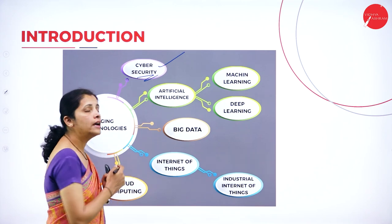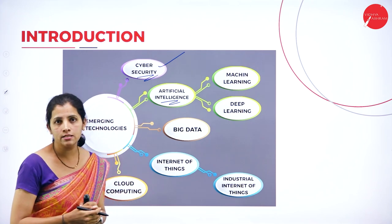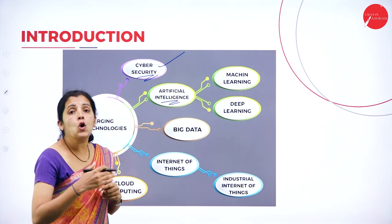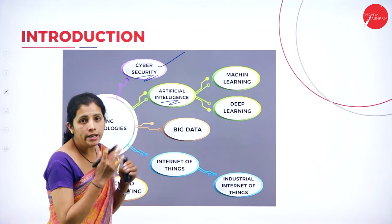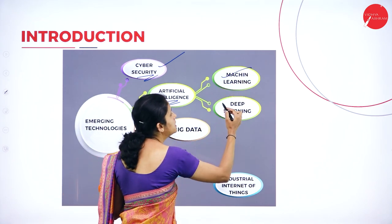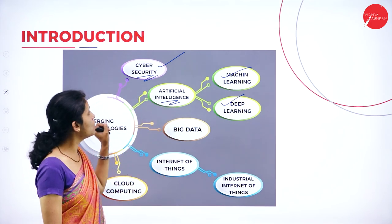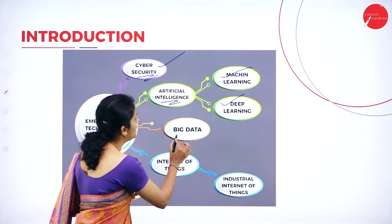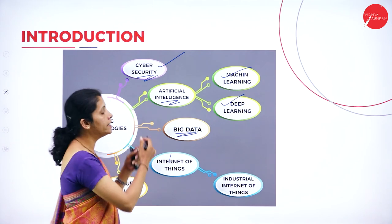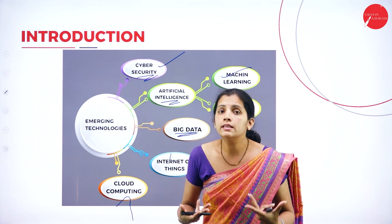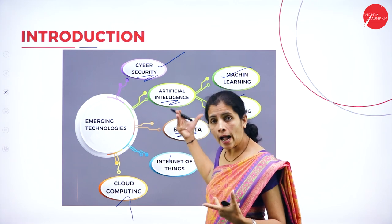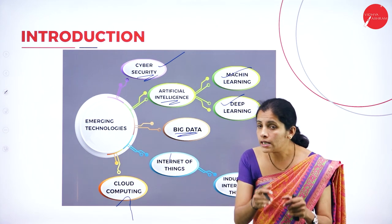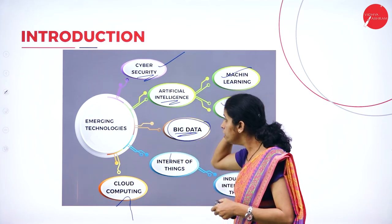Another emerging trend is artificial intelligence. 'Artificial' means man-made and 'intelligence' means cognitive, so AI is man-made cognitive. It includes machine learning as well as deep learning, which are branches of artificial intelligence. Another emerging trend is big data — handling and managing a massive amount of data requires specialized technology, and that is big data.